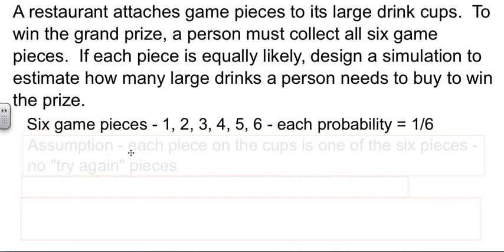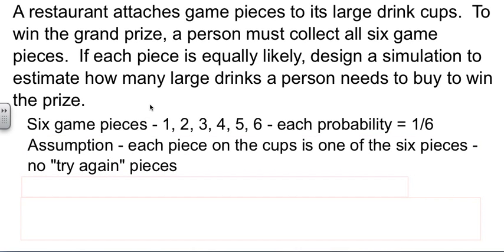Now, we need to state our assumptions. We're going to assume that everything on the cup is actually one of the six game pieces. You don't have one that says you win a free fry, or sorry, try again. Everything you take off the cup, every one of the pieces you get, is actually one of the six pieces in play.